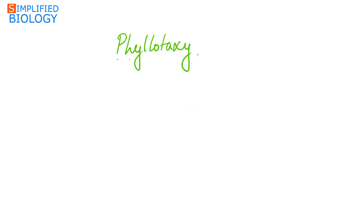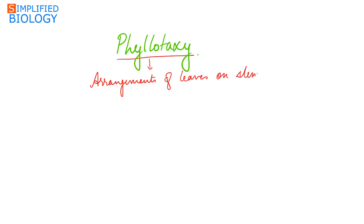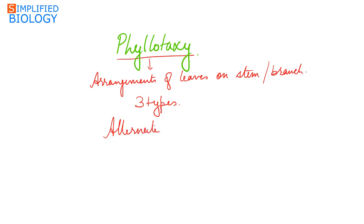Phyllotaxy is the arrangement of leaves on the stem or the branch. Phyllotaxy is of three types: alternate, opposite, and whorled.